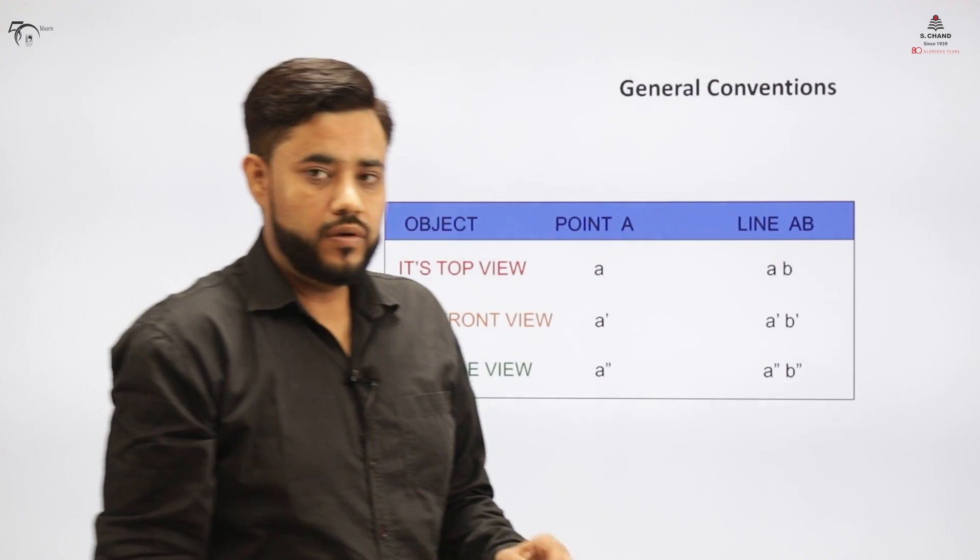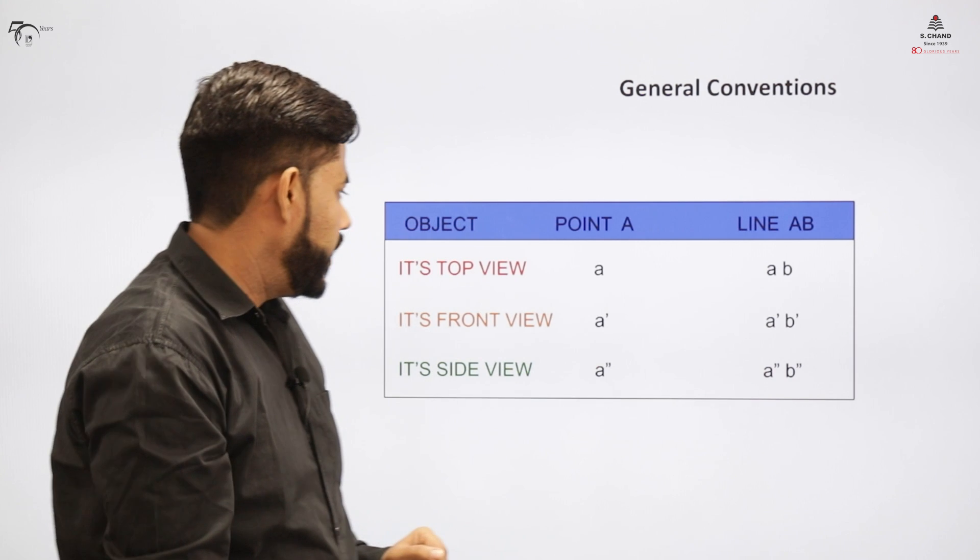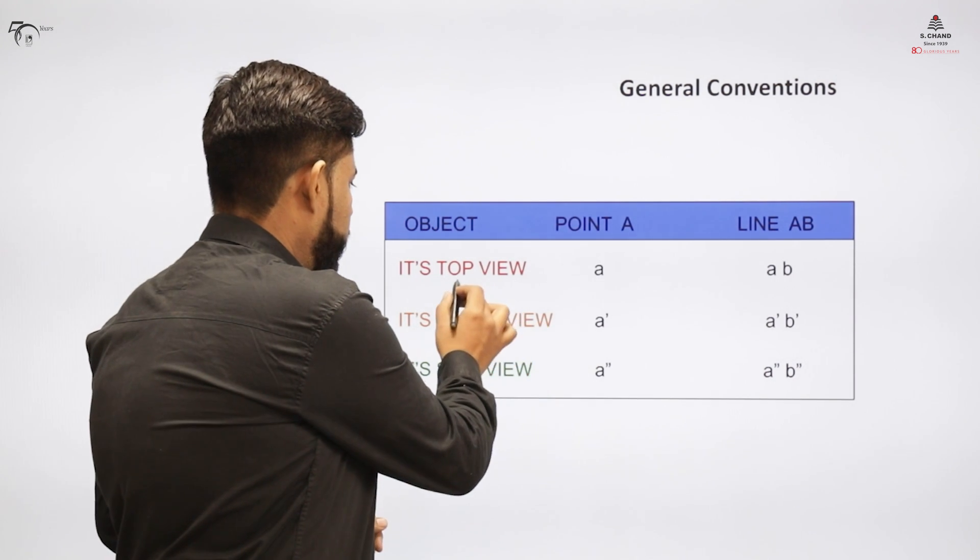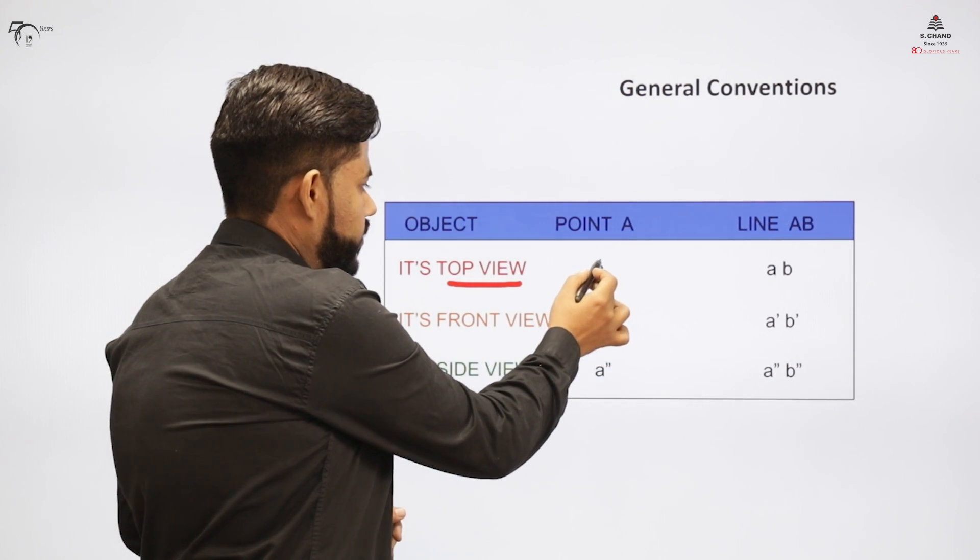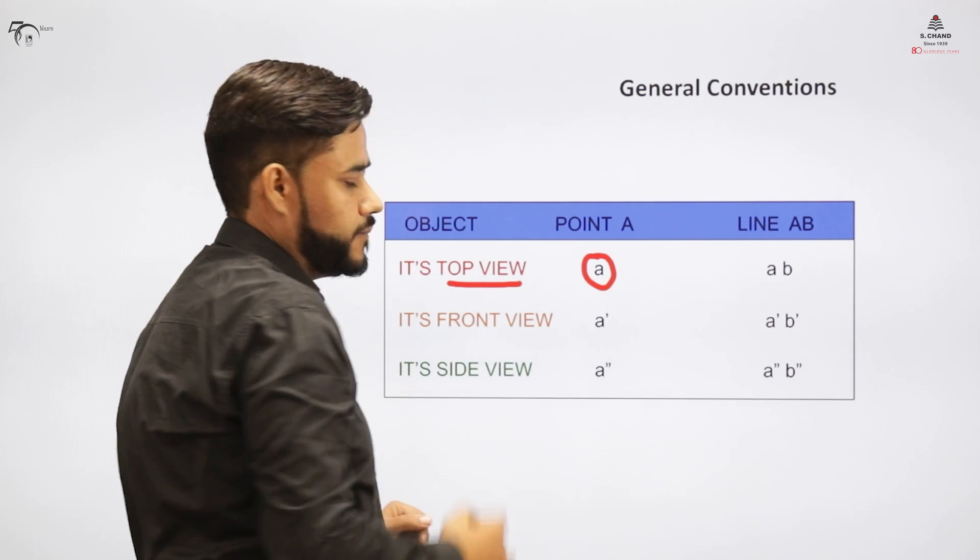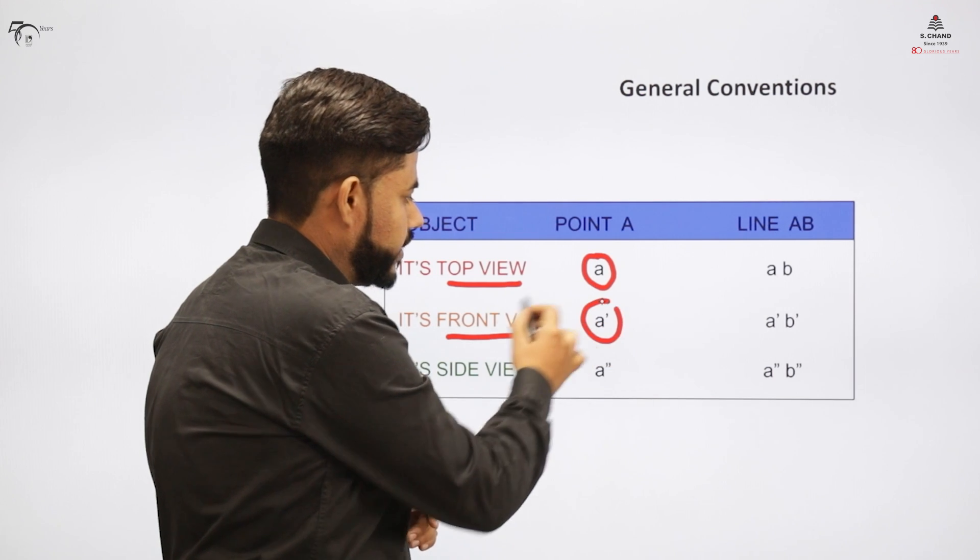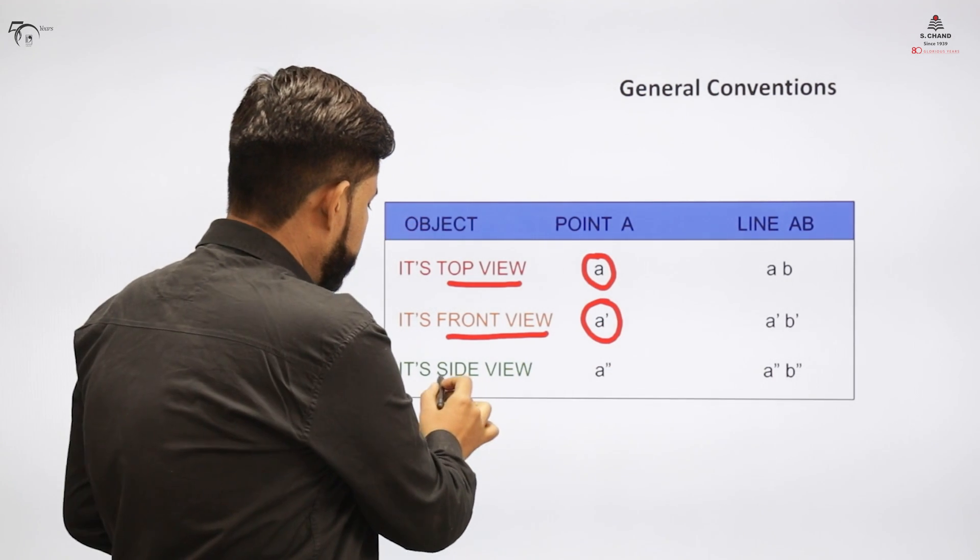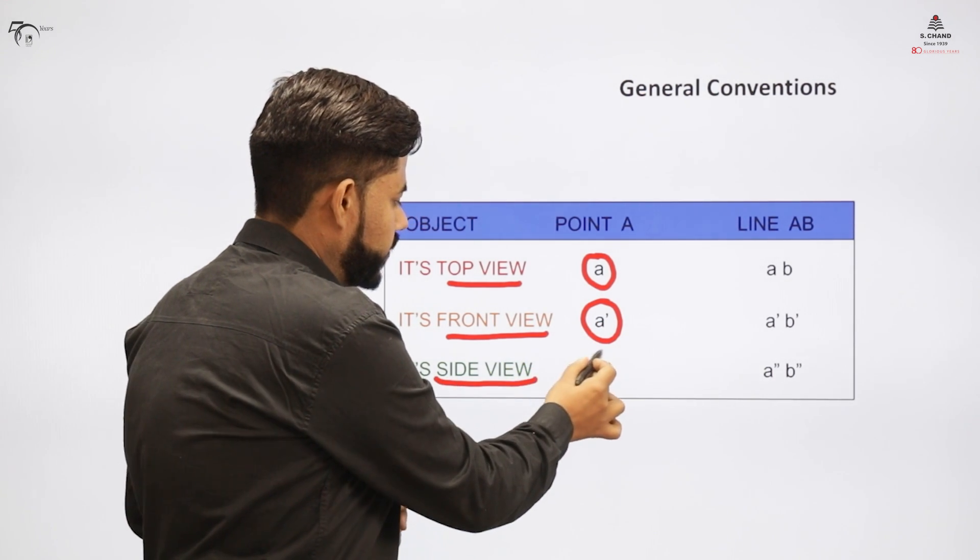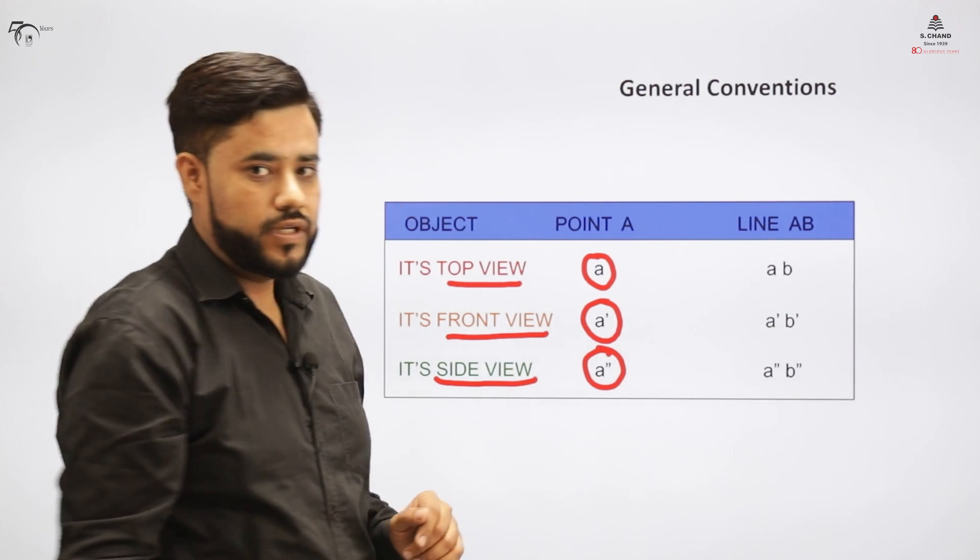If you want to indicate the top view, I would use a small letter. For the front view, I will use a small letter with a dash. And if a side view is to be indicated, I will use a small letter with a double dash.